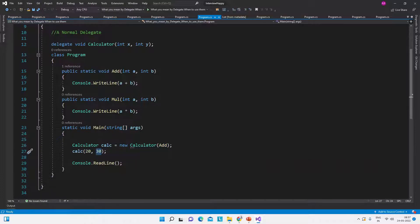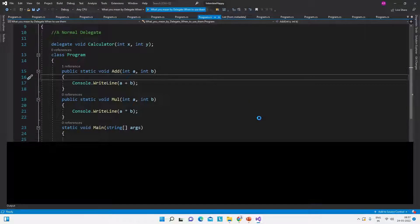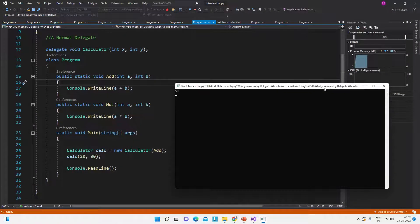So the output expected is we are passing 20 and 30, which will do the addition operation and show this output. So let me show you the same in the output screen. See, the expected output is 50, the sum of 20 and 30. So this is the answer to this question.